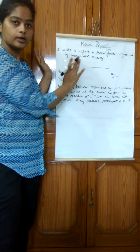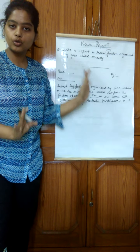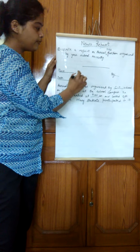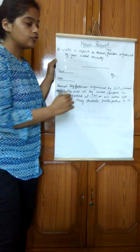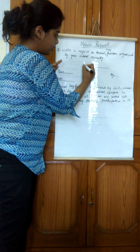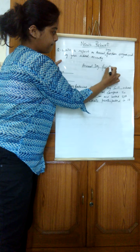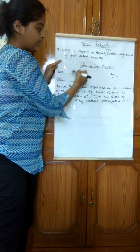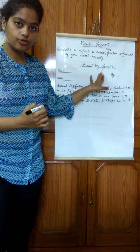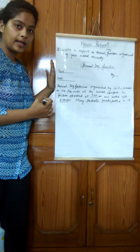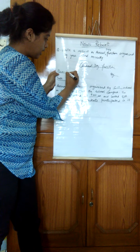The topic is: write a report on the annual day function organized by your school recently. The very first thing is giving the title to your news report — the main heading. So here, suppose the annual day function is there, write 'Annual Day Function'. It should start with a capital letter and come in the middle of the page. After that, write the place on the left-hand side towards your margin — suppose, in Lucknow.